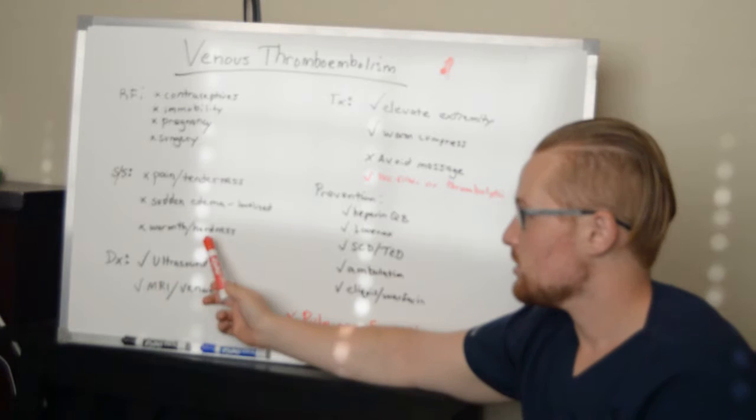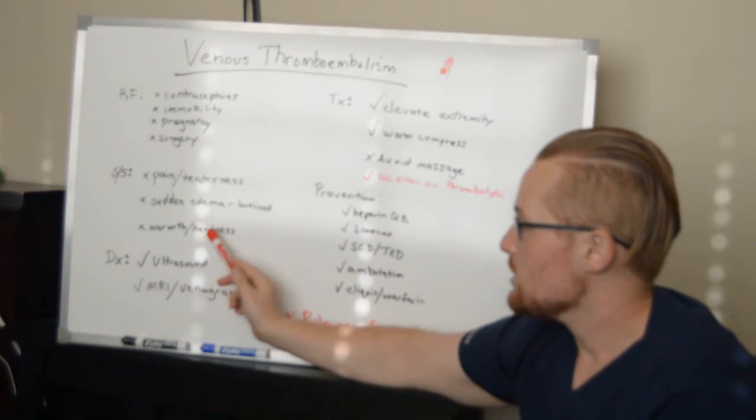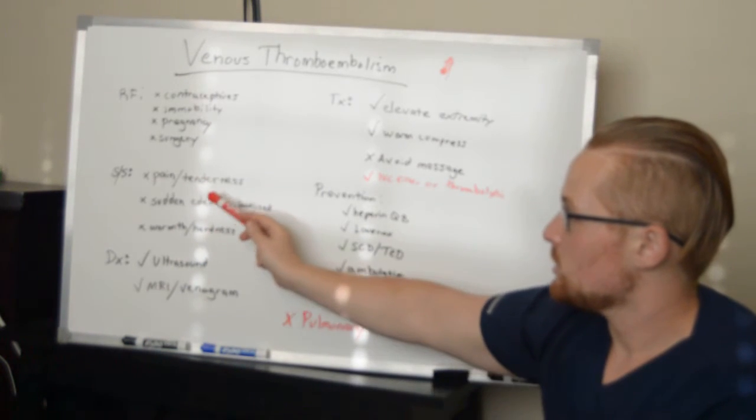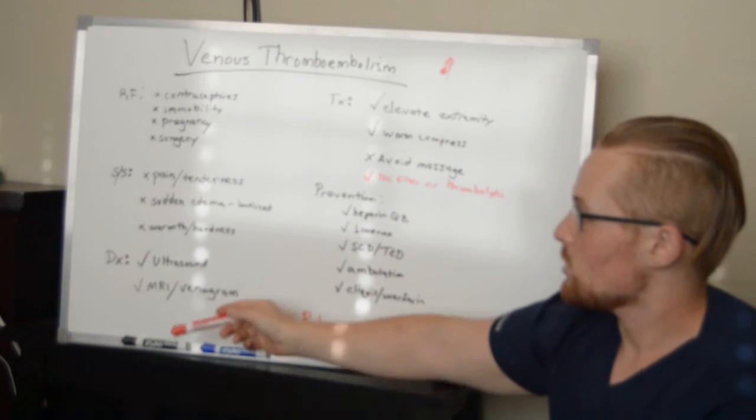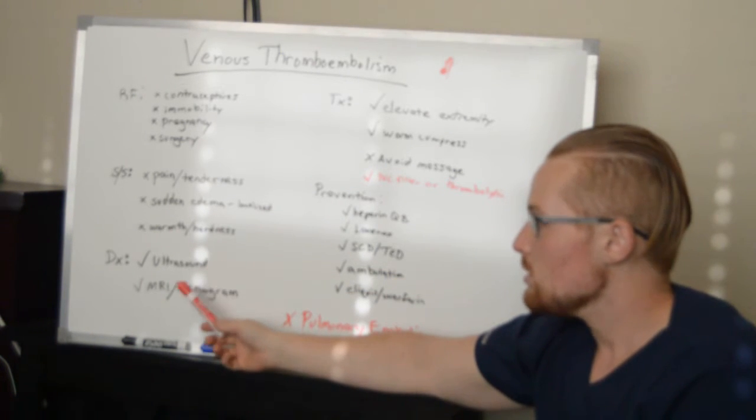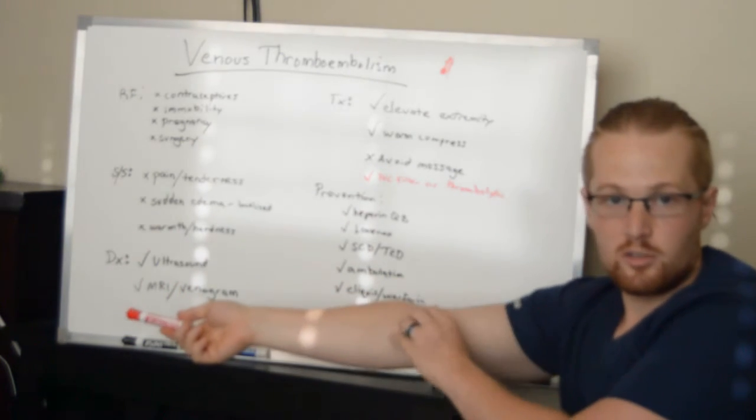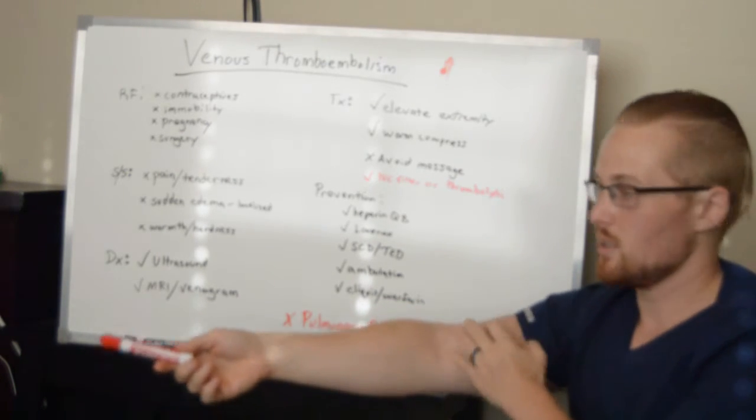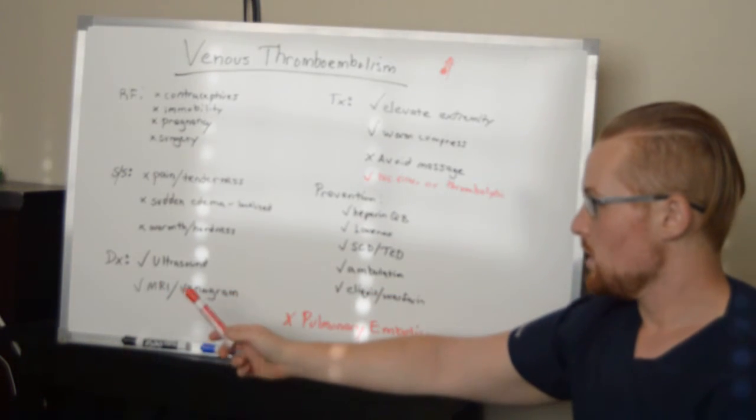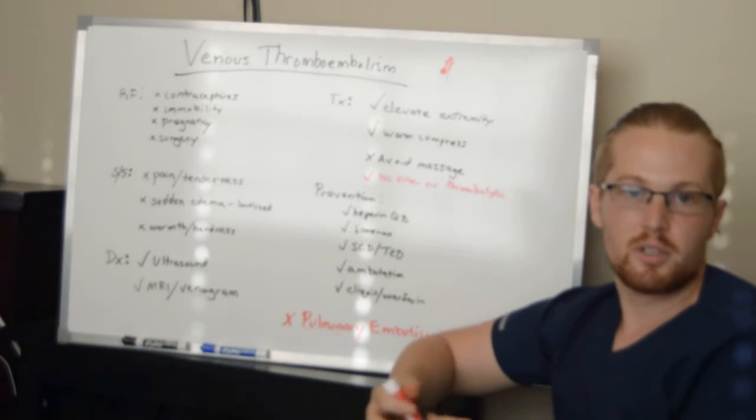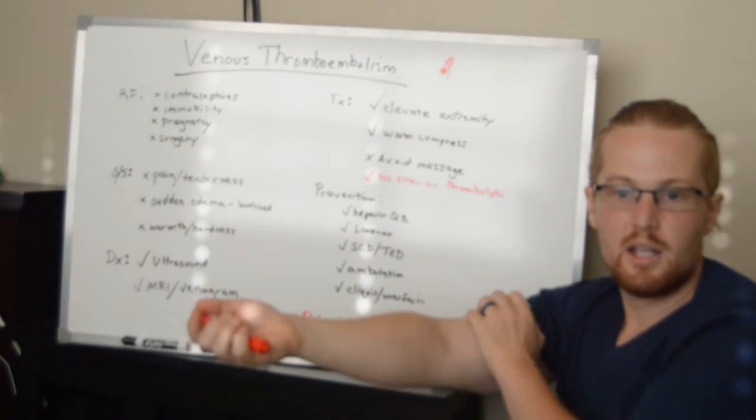How do you diagnose it? Well, you look at the signs and symptoms, you look at the risk factors, and then a doctor can order an ultrasound of the vessel. If they can't see it they can do an MRI or a venogram. The venogram is where they put some IV contrast in to get a better picture of the vessel.